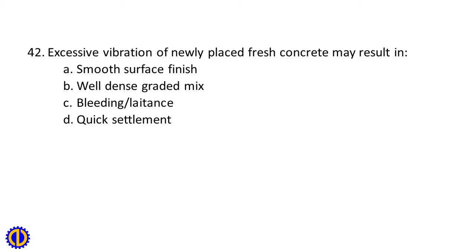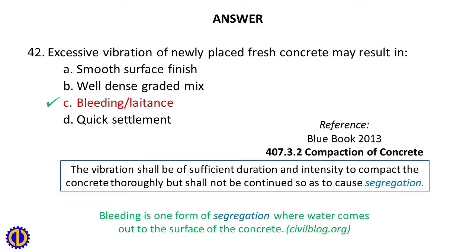Question 42: Excessive vibration of newly placed fresh concrete may result in A. Smooth surface finish, B. Well-dense graded mix, C. Bleeding/laitance, D. Quick settlement. Answer: C. Bleeding/laitance. Reference: Blue Book 2013, Item 407.3.2 Compaction of Concrete — Vibration shall be of sufficient duration and intensity to compact the concrete thoroughly but shall not be continued so as to cause segregation. Bleeding is one form of segregation where water comes out to the surface of the concrete.